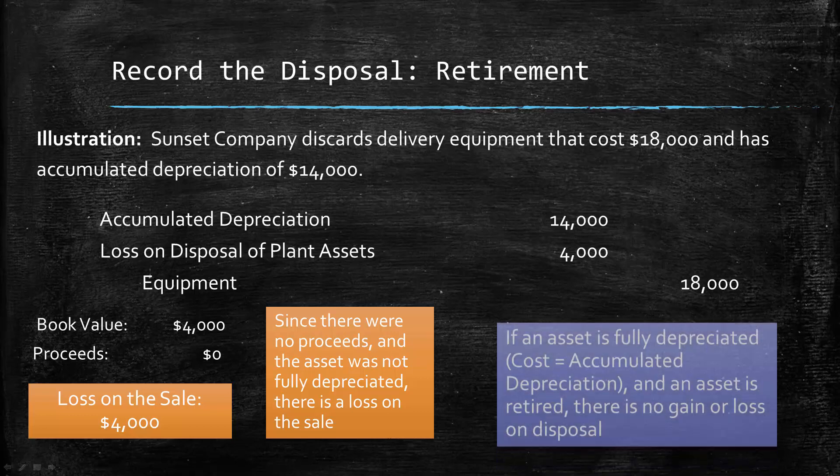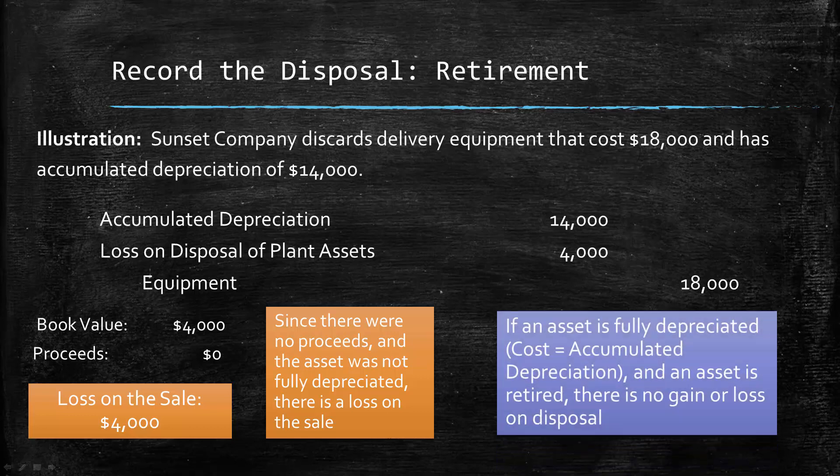Now if the asset had been fully depreciated, meaning the cost equals the accumulated depreciation, then there would be no gain or loss on the sale. You would just have the debit to accumulated depreciation and the credit to equipment.